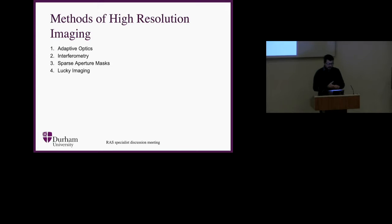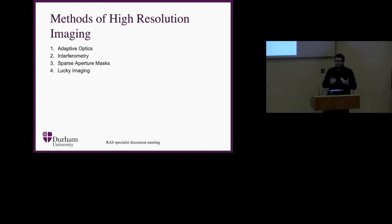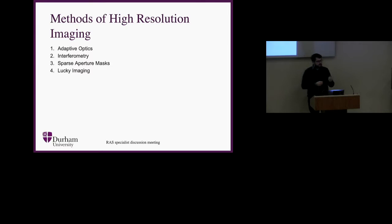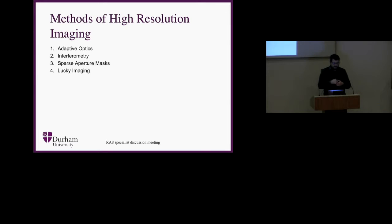From what we saw this morning and from my general background, I think there are four main areas of high resolution imaging: the adaptive optics side, interferometry, sparse aperture masking — which may be a branch of interferometry but I think it's distinct enough — and lucky imaging. They are all related to how we overcome atmospheric issues, the effects of the atmosphere and turbulence, and get down to as high resolution imaging as we can.